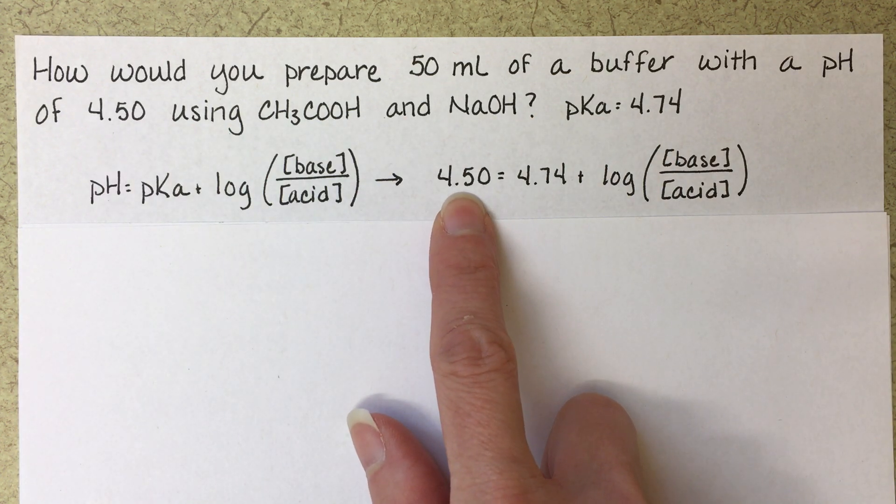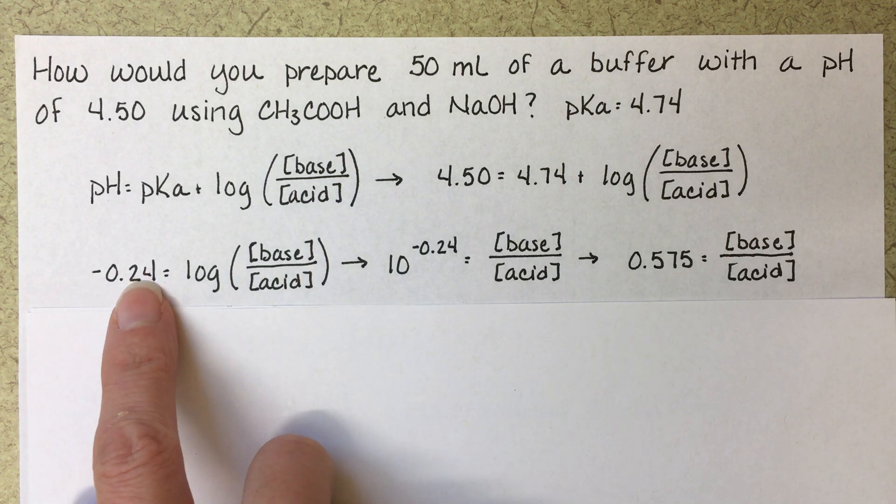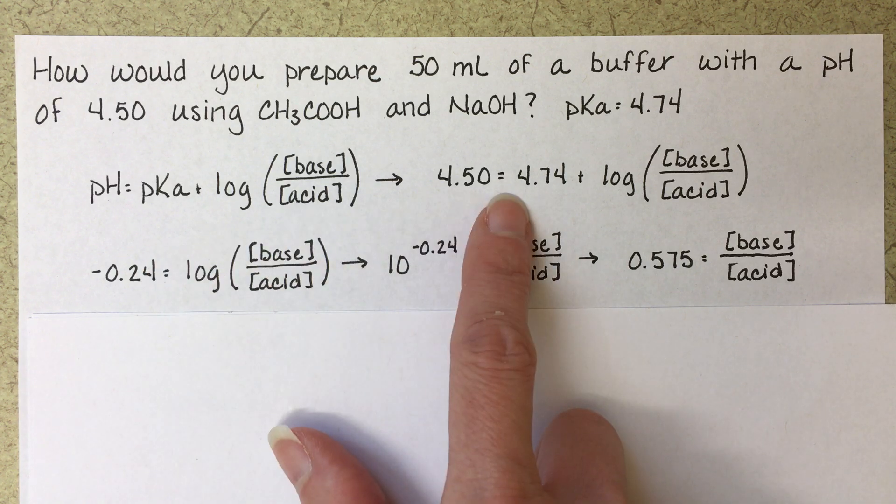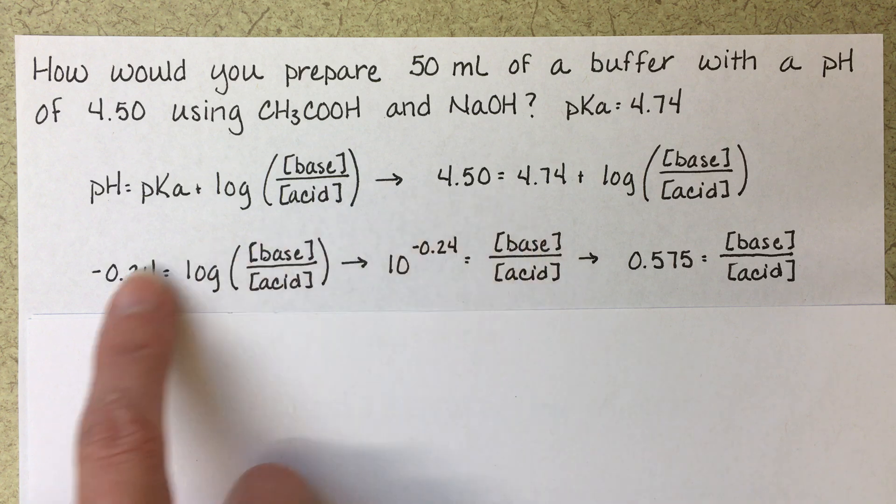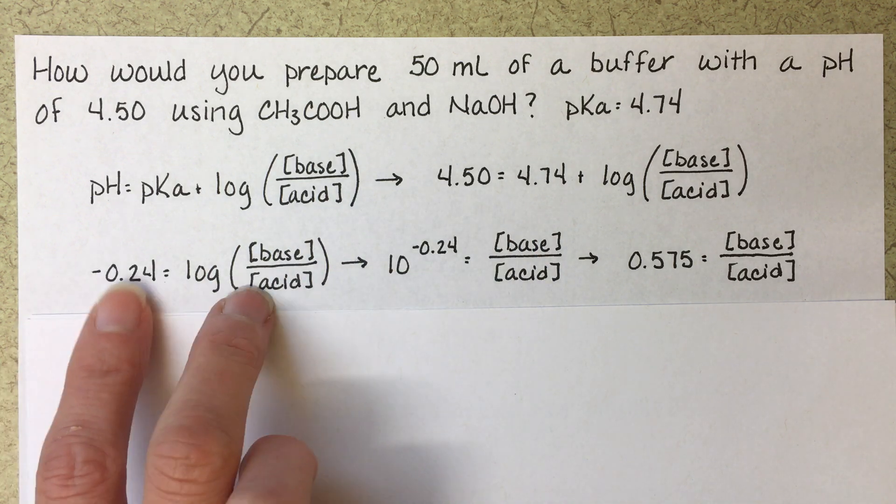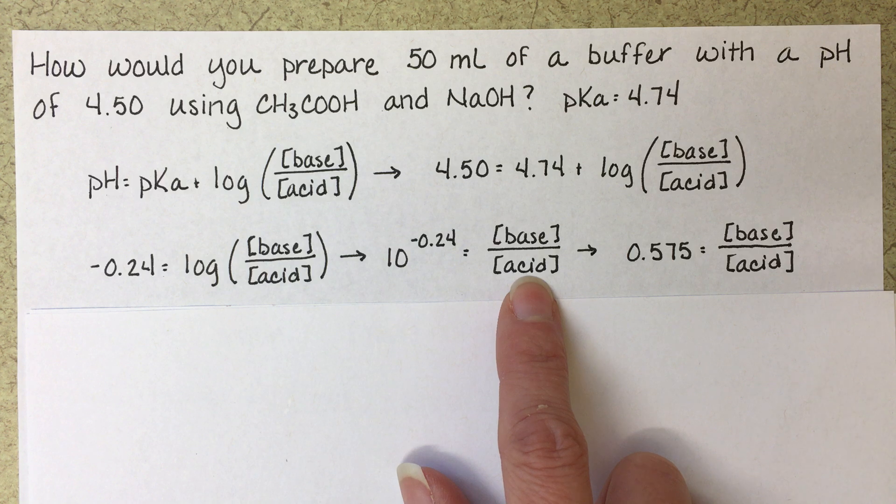So we're plugging in our desired pH and our pKa. We're going to do some algebra to figure out the ratio of base to acid. So here we're moving 4.74 to the other side of the equation. Taking the antilog of both sides of this equation, 10 to the minus 0.24 is equal to the concentration of base over acid.